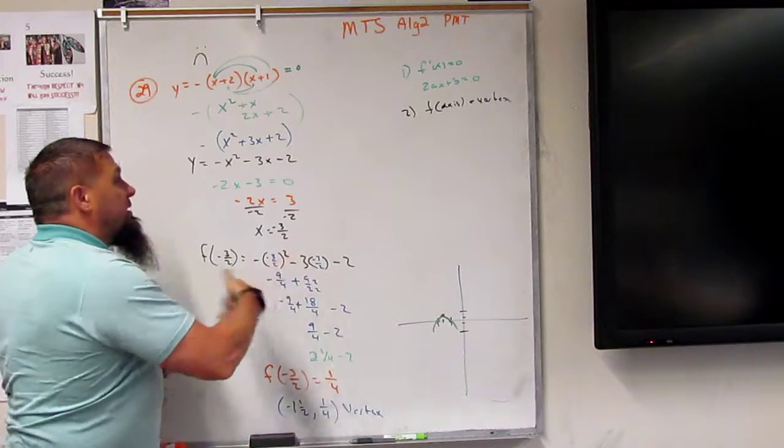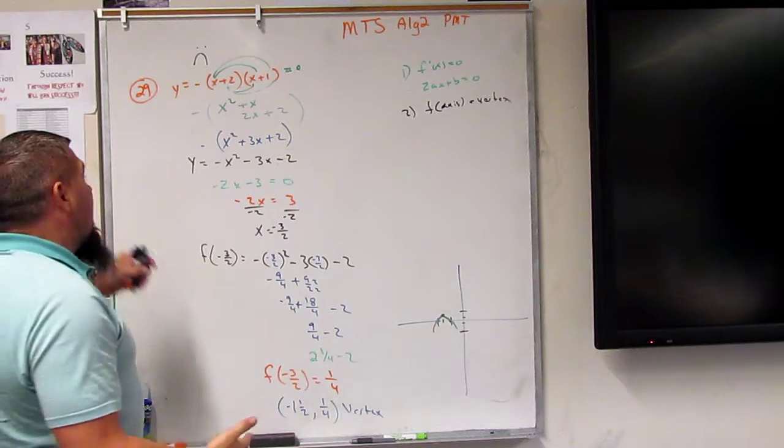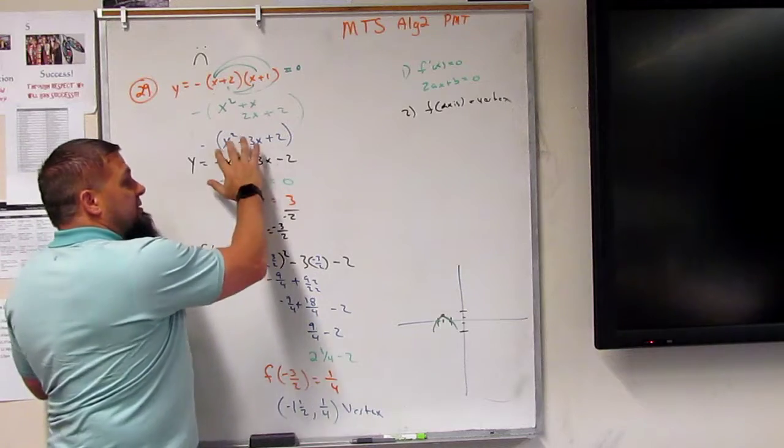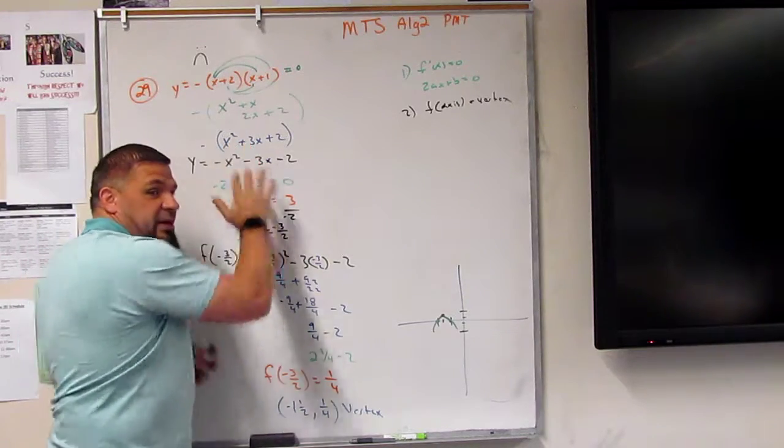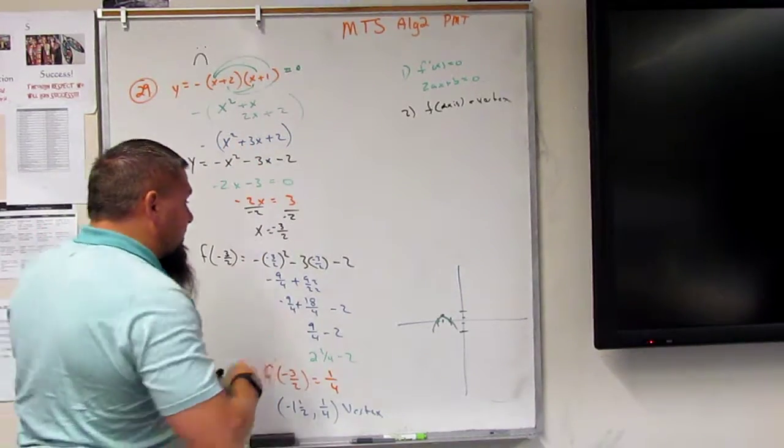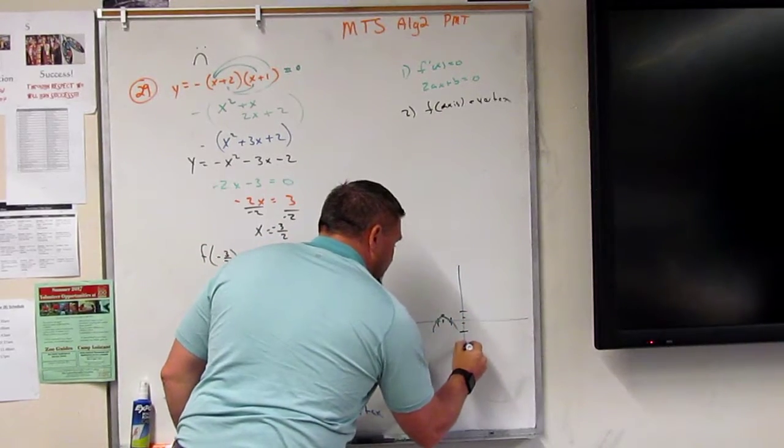But I could plug in the 0s, right? And if I plug in a 0, that's going to make this a negative 2, right? So if I plug in a 0, this is going to go to 1, 2, right?